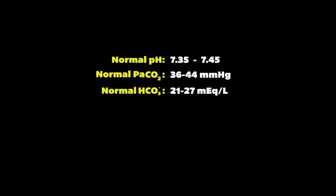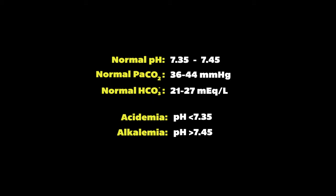When there are derangements in bicarb and carbon dioxide, we also begin to see abnormalities in our pH. When our pH is less than 7.35, we call this an acidemia. And when our pH is greater than 7.45, we call this an alkalemia.